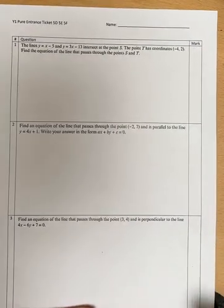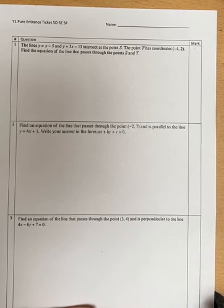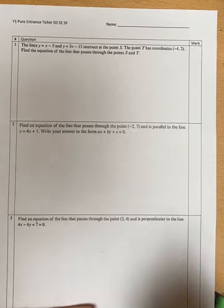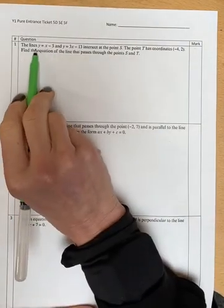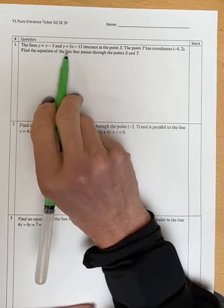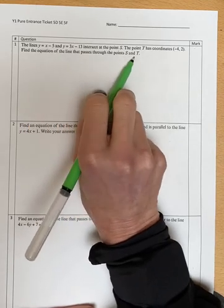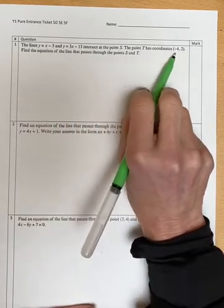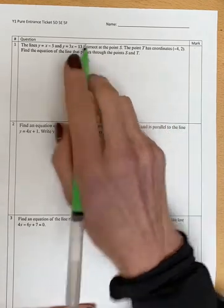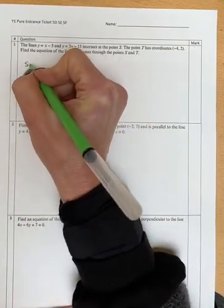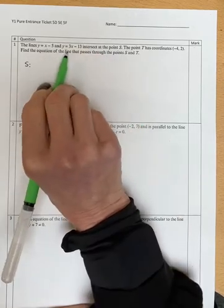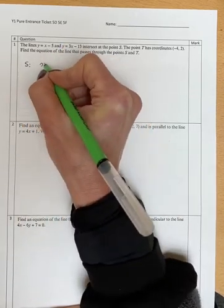Okay, so answers to the entrance ticket on 5d, 5e, and 5f. The first question asks you to find the equation of the line through points S and T. You know the coordinates of point T and you need to find the coordinates of point S. So actually this is simultaneous equations - you need to solve them simultaneously.